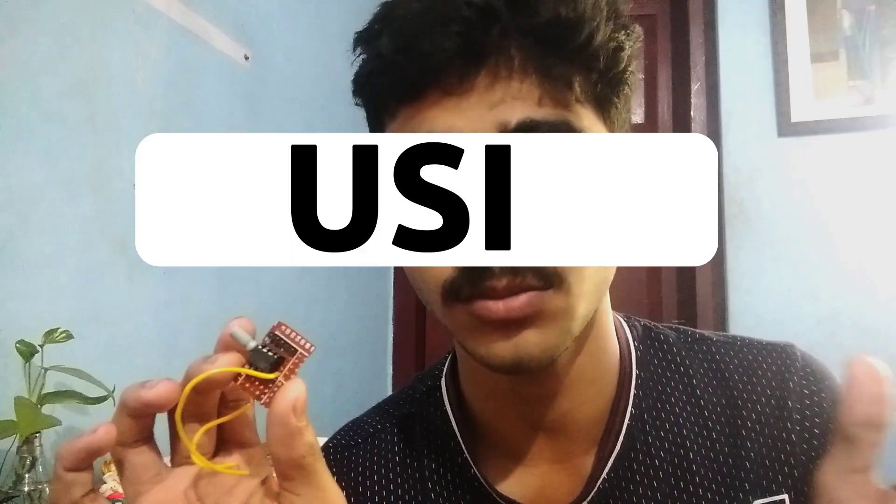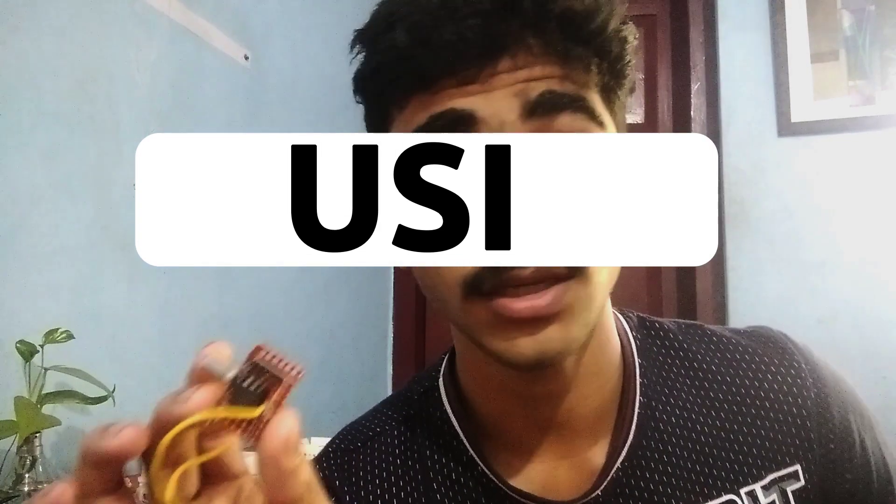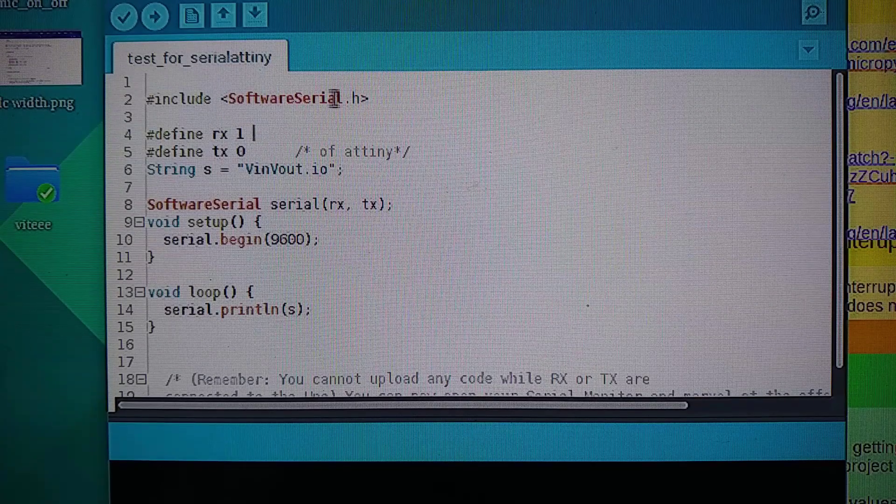One thing to note is that our ATtiny85 does not support SPI or I2C communication. Instead, it has a special module called USI, Universal Serial Interface, which can be used to perform specific SPI or I2C functions. For that, here we are going to implement Software Serial. So this is pretty easy to do. You just need to import the Software Serial library.